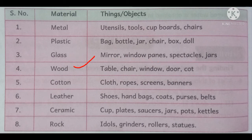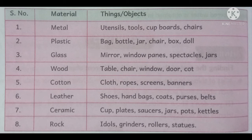The next one is wood. By using wood, we can prepare tables, chairs, windows, doors, cots, etc. The next one is cotton. By using cotton, we can prepare clothes, robes, screens, banners, etc.